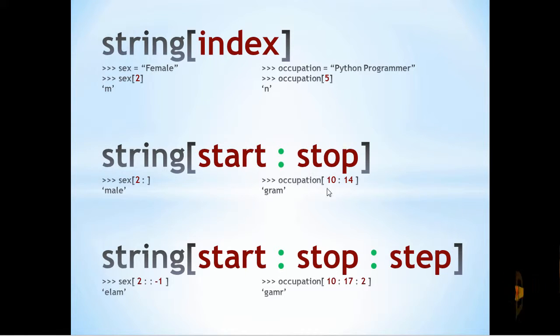There is also a start-stop method, such that we can tell it where to start accessing the characters from the string, and where to stop. In this first example, there is no stop, so we are getting the rest of the whole word, being male. And on the right here, we are getting Graham, the eleventh to fifteenth member of Python programmer.